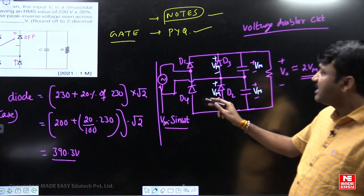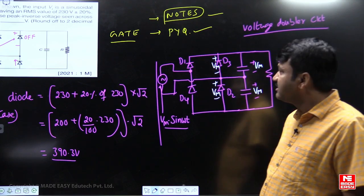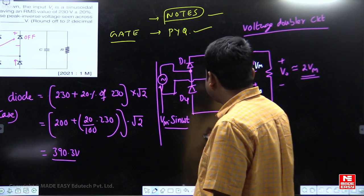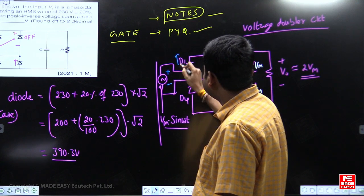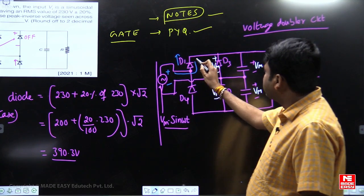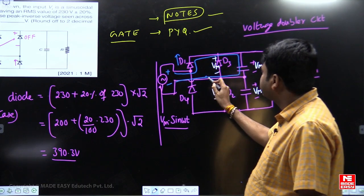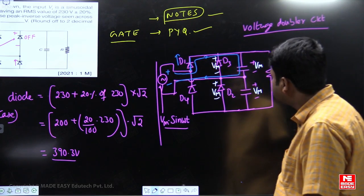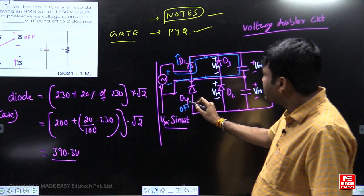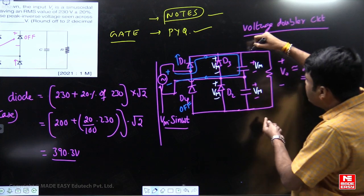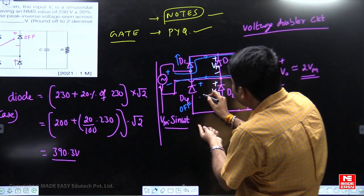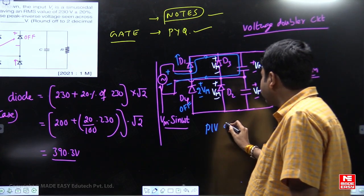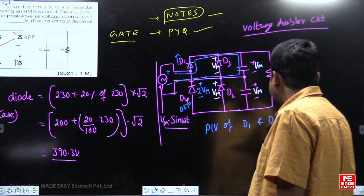But what is the PIV of D1 and D4? D1 and D4 are complementary. In the positive half cycle, if D1 is in the on state, current passes through D1. When D1 is charging the upper capacitance and these two terminals are shorted, D4 remains in the blocking state in the positive cycle. When D4 is in the blocking state, the voltage across the DC terminals is 2Vm volts. So the voltage across D4 is 2Vm volts, and similarly, PIV of D1 is also 2Vm.